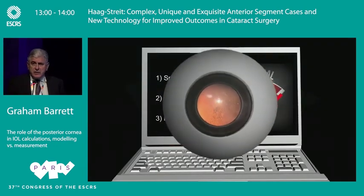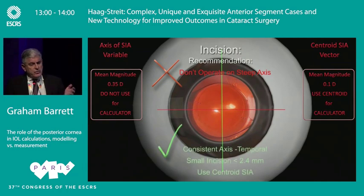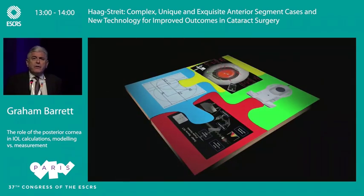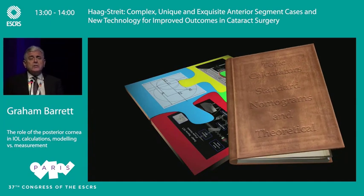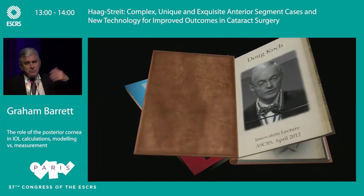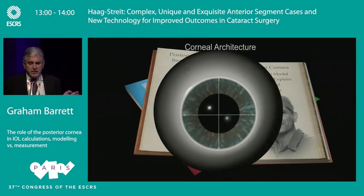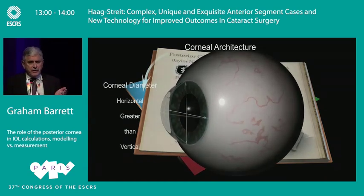For toric cylinder prediction, we've learned so much. We've learned not to use the mean magnitude for SIA — we use a centroid value instead. We've learned to keep the axis at a consistent location, keep it small, and use SIA of the centroid value. Different methods of alignment have brought big improvements. Perhaps one of the most important events was Doug Koch's lecture in 2012, reminding us not to forget the posterior cornea. There are various ways to use it: regression, ray tracing.